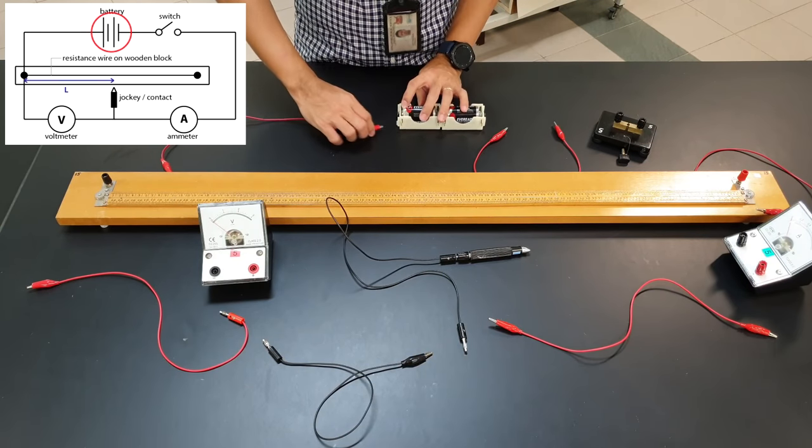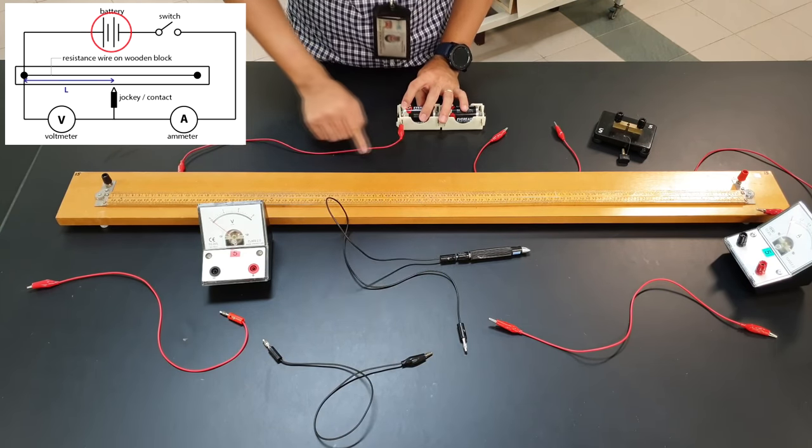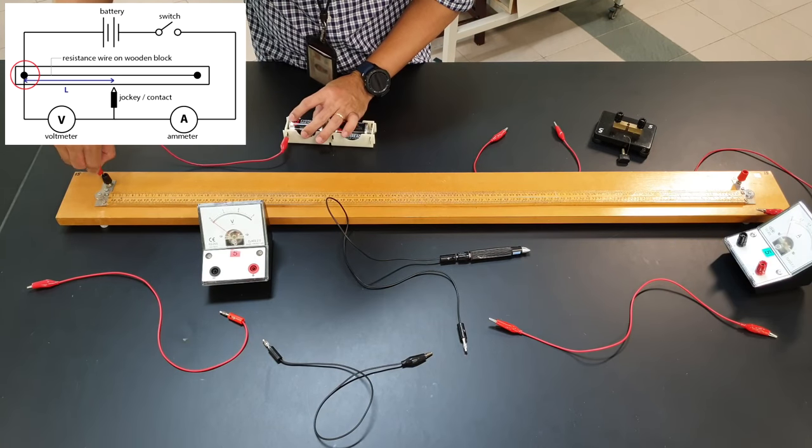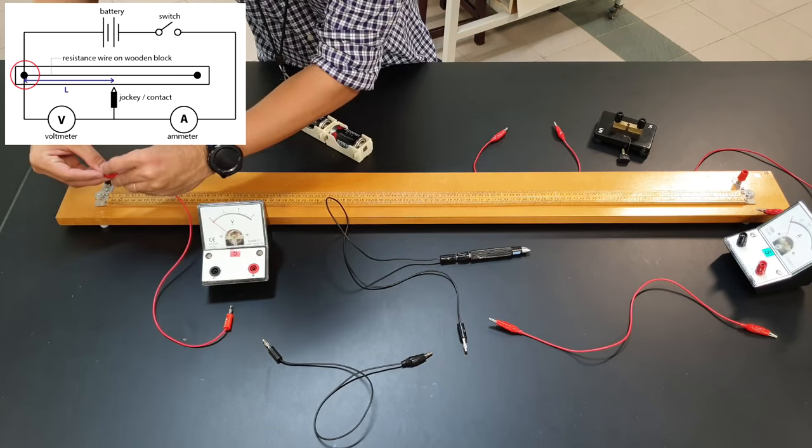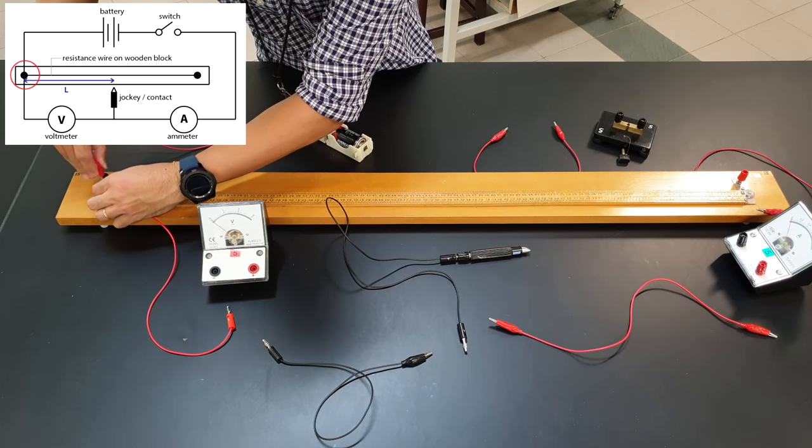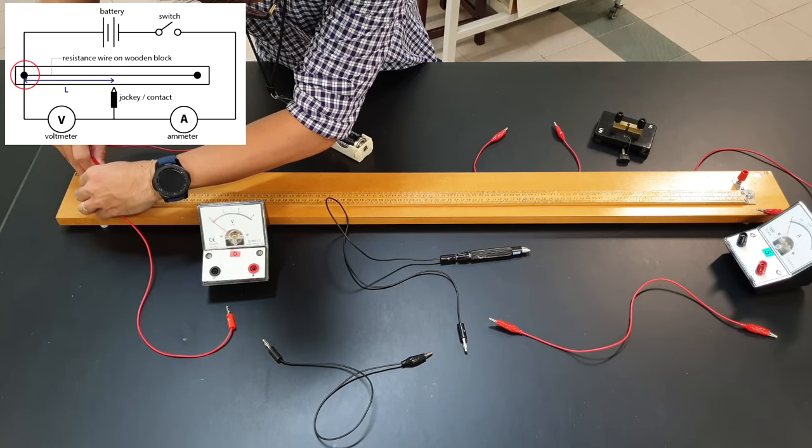will flow from the positive terminal. At this connection point, it's like a T-junction—one end goes to the resistance wire on the ruler, the other end proceeds to the voltmeter. This is a close-up view. As long as the crocodile clip is clipped to the metal part, that